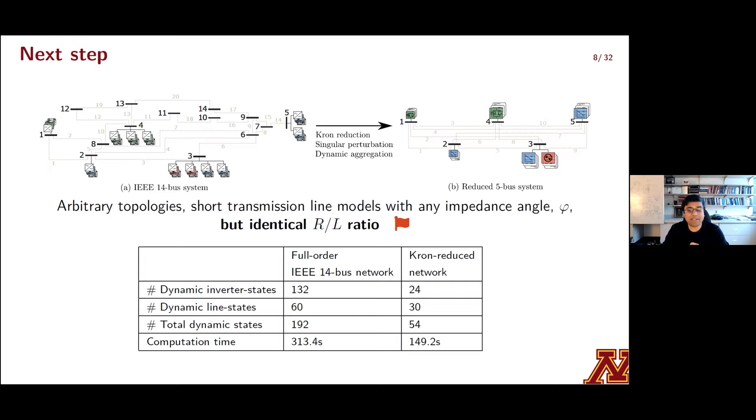But for now, let's go back to model reduction for the entire network. I'll present these ideas in the context of the 14 bus network that's sketched on the left. We applied singular perturbation and dynamic aggregation at the node or the bus level, and we'll also throw time domain Krone reduction at it. And what you get then is a reduced order model from both nodal and network points of view that you can simulate with ease. The table shows you the reduction in number of dynamic states and the corresponding reduction in computation time.